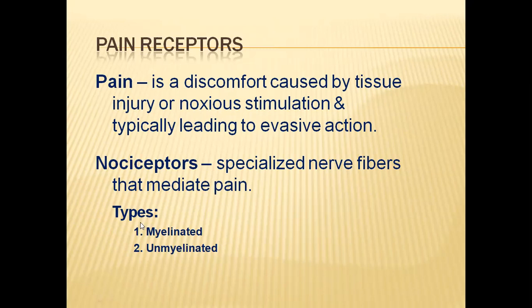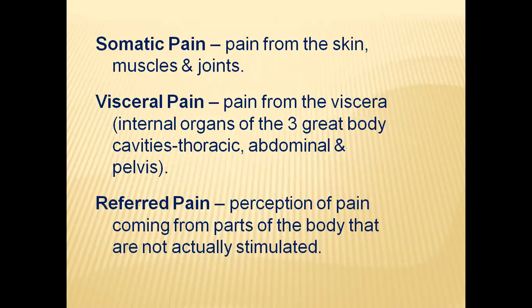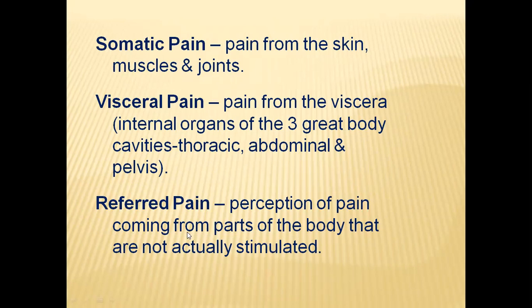Nociceptors are further divided into types. Some receive somatic pain — these are present in skin, muscles, and joints. Some others receive visceral pain — these are present in internal organs of the body, usually the thoracic cavity, abdominal cavity, and pelvic region. Referred pain nociceptors perceive pain coming from parts of the body not actually stimulated — they convey information from other nociceptors indirectly, not directly receiving pain.